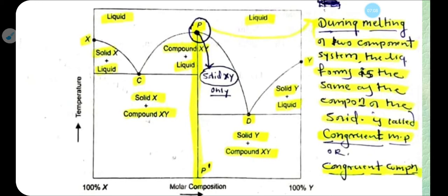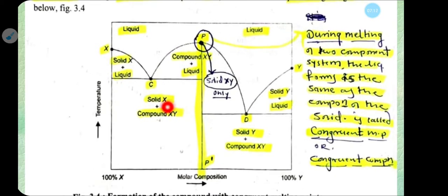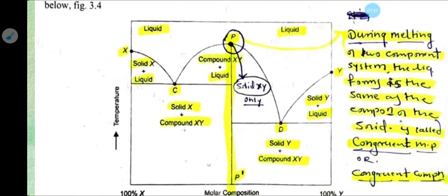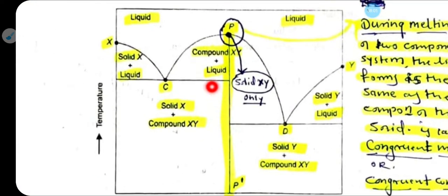This phase diagram has three curves. The first curve runs from point A to point C. The second curve runs from C to P to D. The third curve runs from D to Y. Let us examine these three curves and the regions they define in the phase diagram.